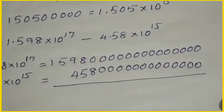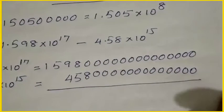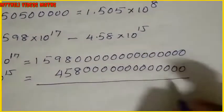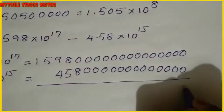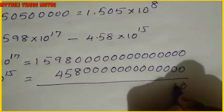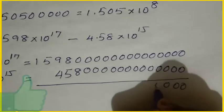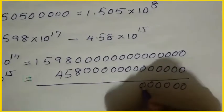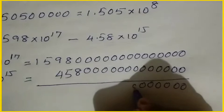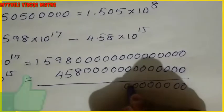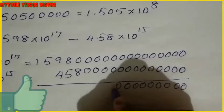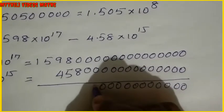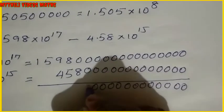Now we subtract. The subtraction gives zeros in the higher positions: 0, 0, 0, 0, 0, 0, 0, 0, 0, 0, 0, 0 — all zeros down through those place values.